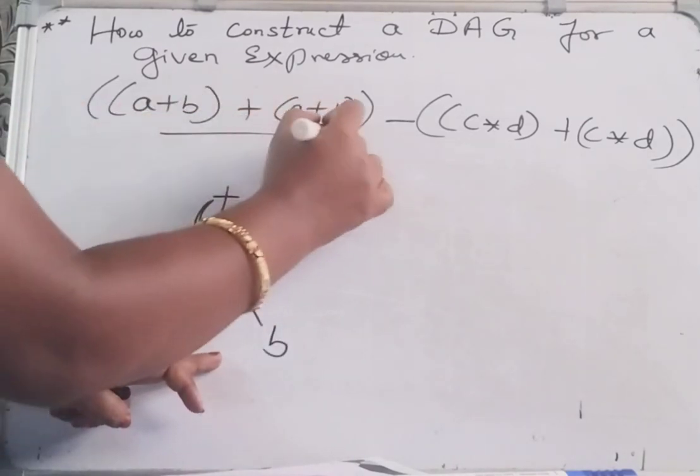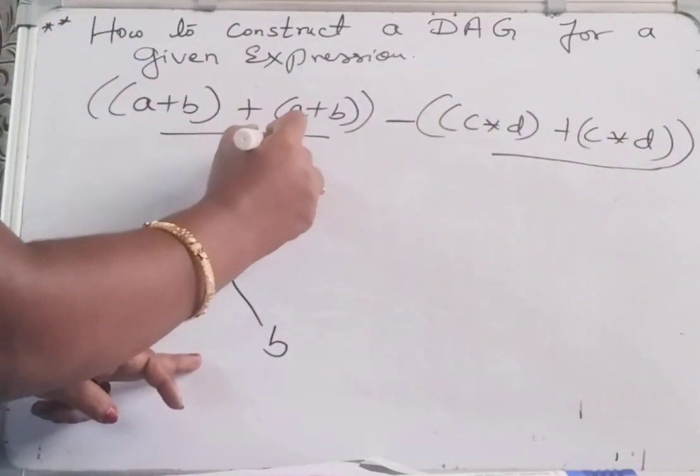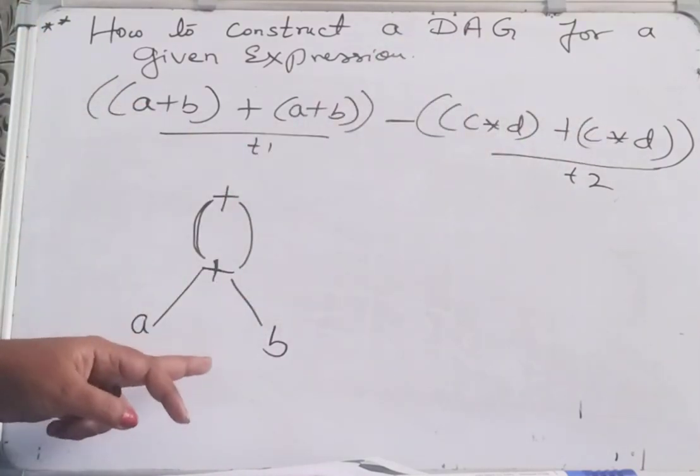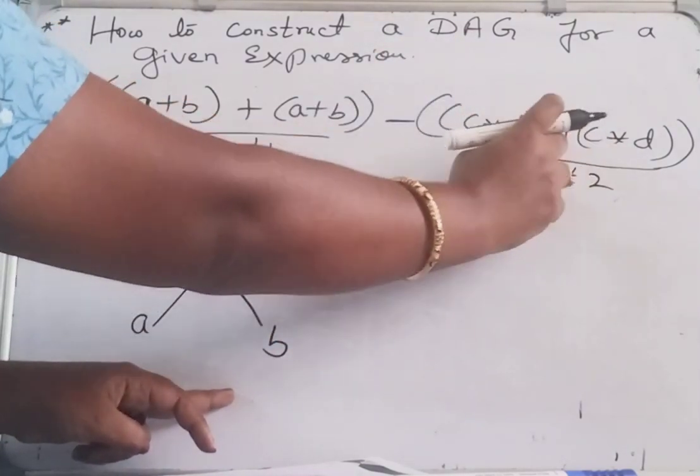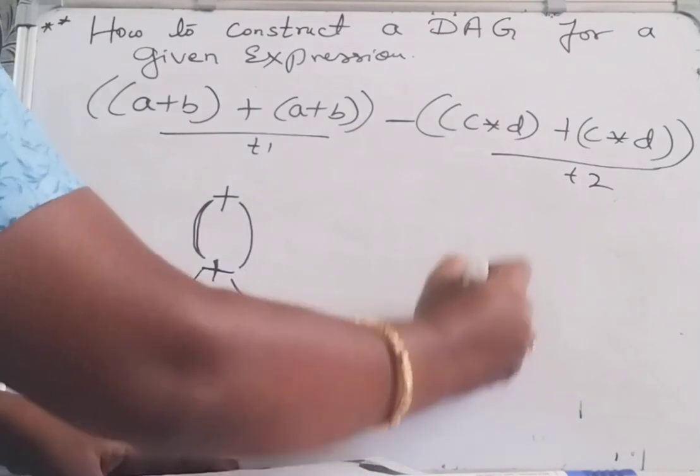And this part minus this part, this entire thing minus this one. That is T1 and T2 if I take. So for this C star D plus C star D, how to write? First construct the leaf nodes in the brackets.